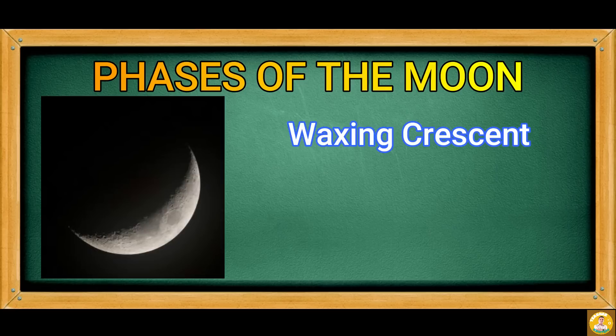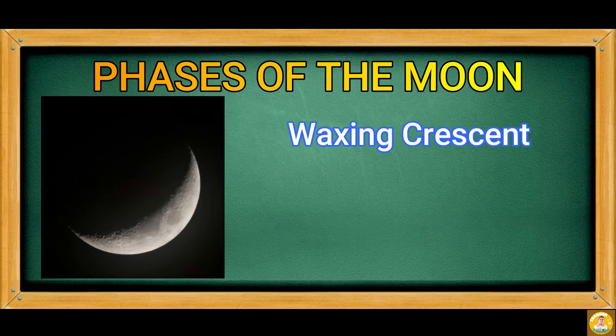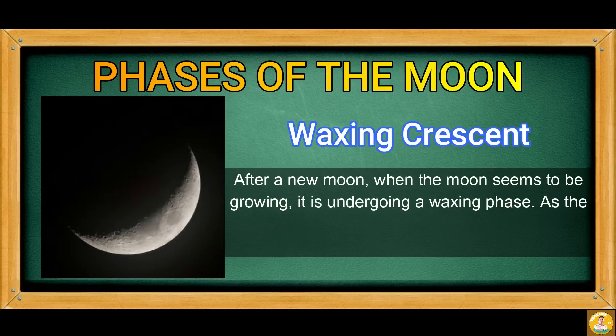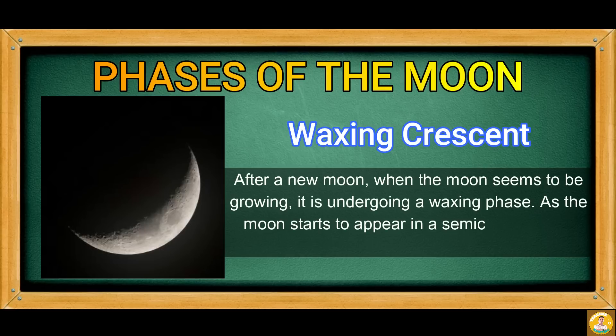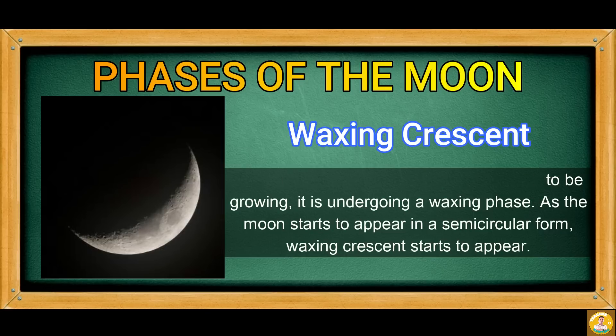The next phase is Waxing Crescent. After a new moon, when the moon seems to be growing, it is undergoing a waxing phase. As the moon starts to appear in a semicircular form, the Waxing Crescent starts to appear.